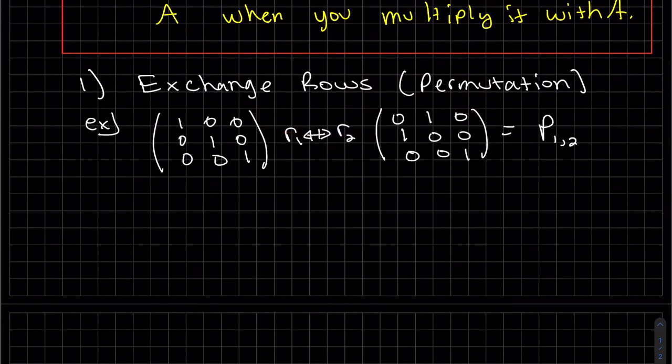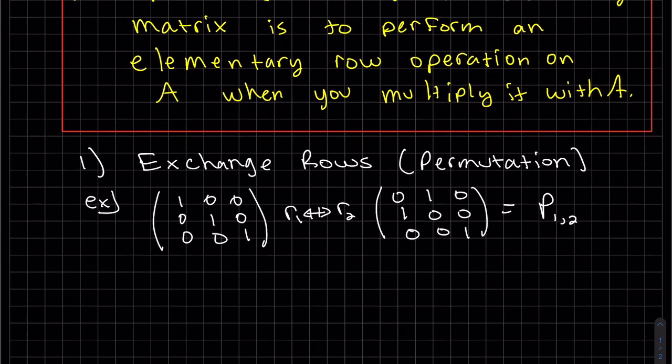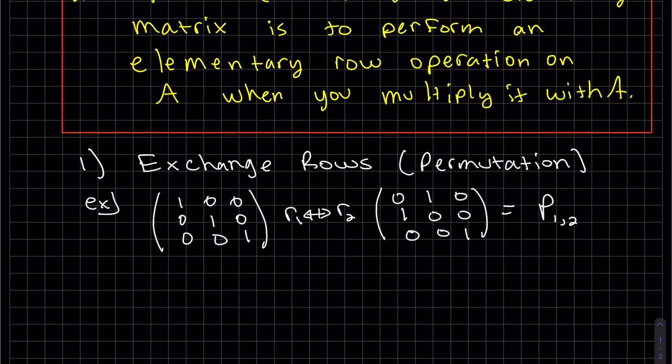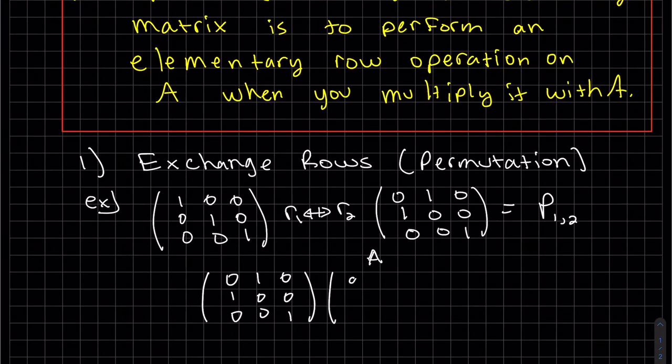So again instead of showing this, the effect of this permutation matrix, it will perform that operation when you multiply it with a matrix A. So let's multiply it with a general A.